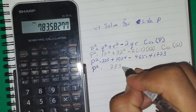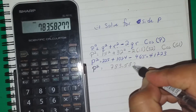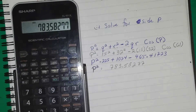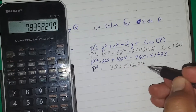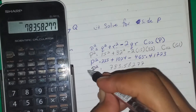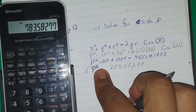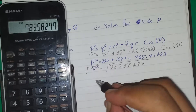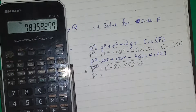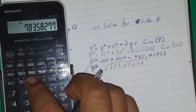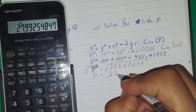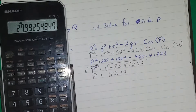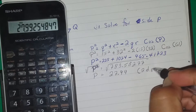Entering that gives P squared equals 783.58277. Please verify this with your own calculator. Since we are solving for P and not P squared, we take the square root of both sides. The square root of 783.58277 gives P equals approximately 27.99, rounded to 2 decimal places.